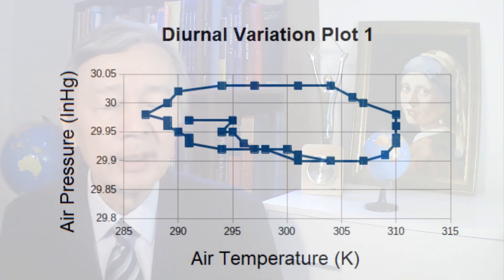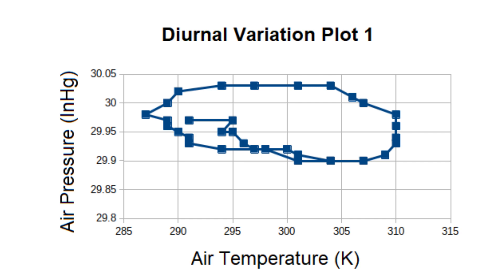To my surprise, one viewer immediately sent me a plot of the daily air temperature and air pressure simultaneously recorded in the local weather station, as shown in this diagram. The vertical axis is air pressure in inch mercury and the horizontal axis is air temperature in Kelvin. As you can see, the pressure was almost constant when the air temperature had changed noticeably.